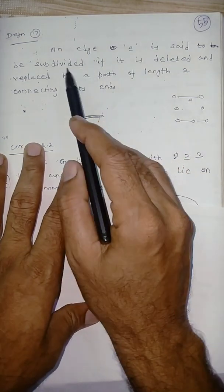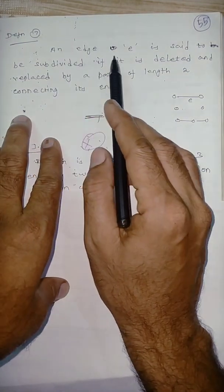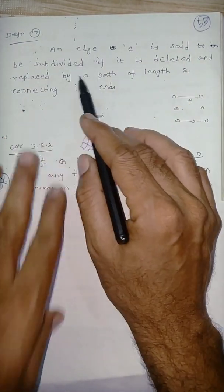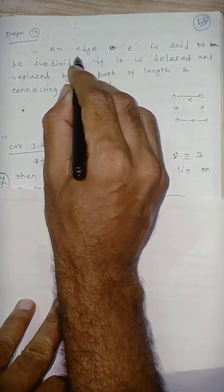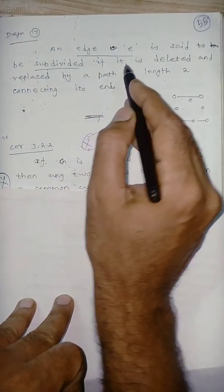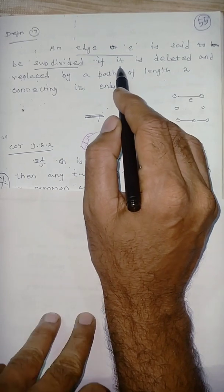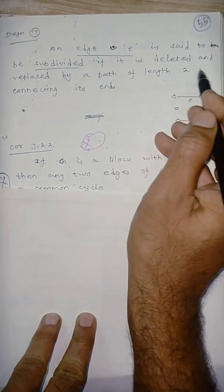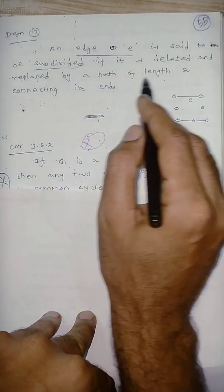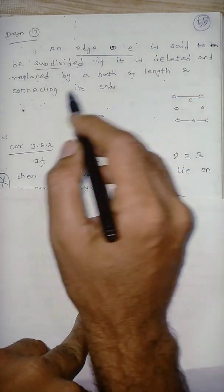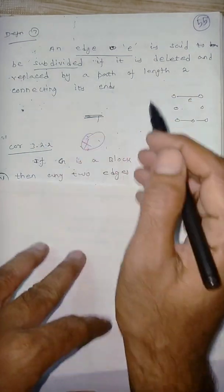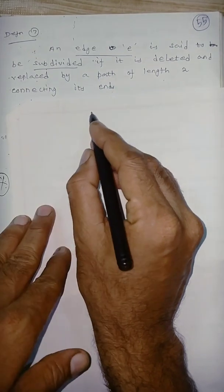Next, one definition. An edge e is said to be subdivided — one edge e is subdivided when it is deleted and replaced by a path of length 2 connecting its ends.